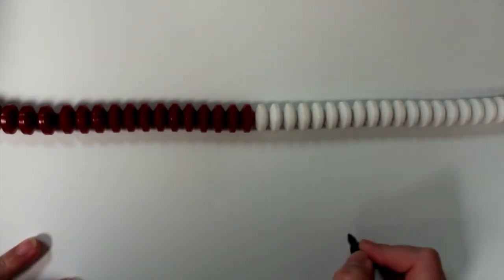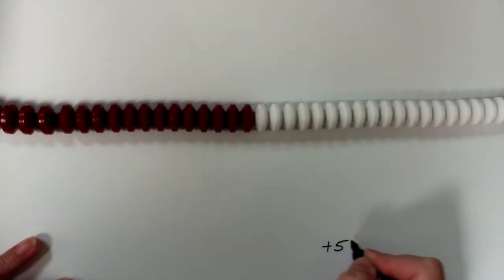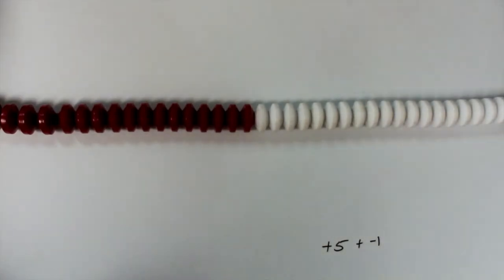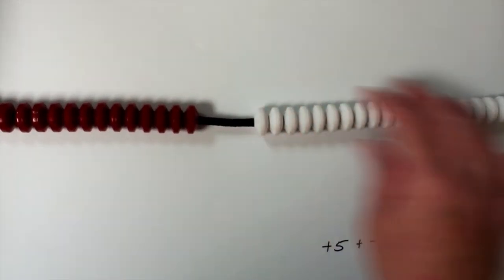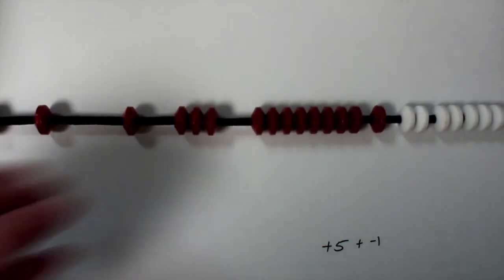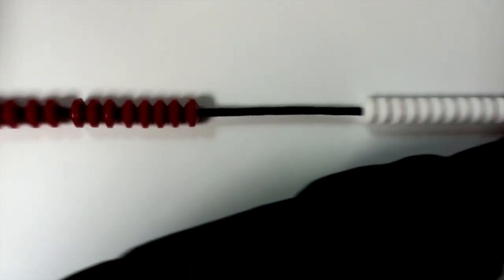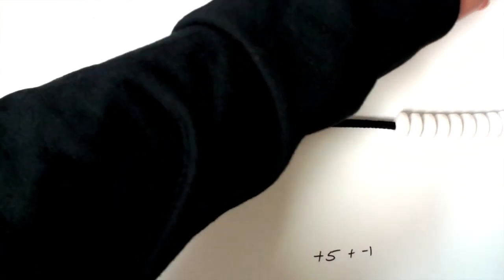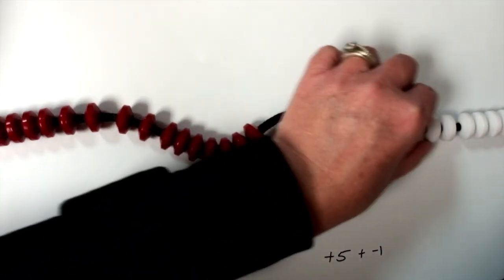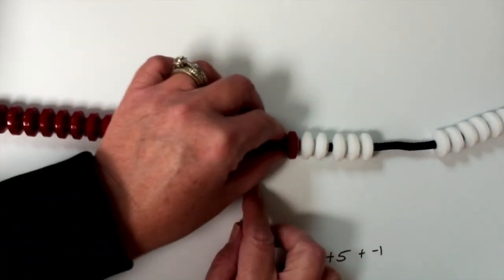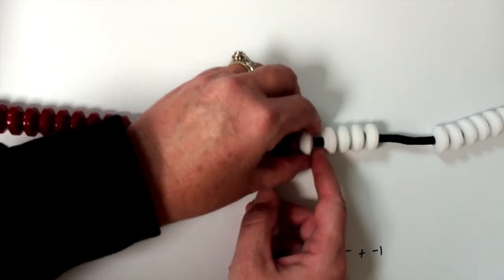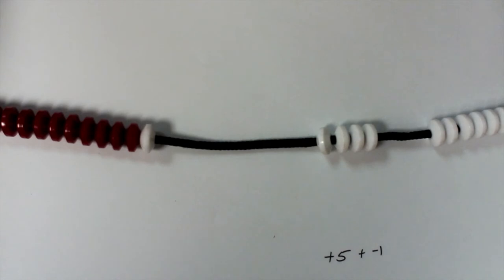A good example is positive five plus negative one. Keep in mind, we've talked about zero pairs — they know that zero pairs cancel out. So I would have a little gap in between. Positive five — in this case, red is always negative — so I want to bring over five white beads. And a negative one. Do I have anything that cancels out? I do. And what am I left with? Positive four. So they can see that.